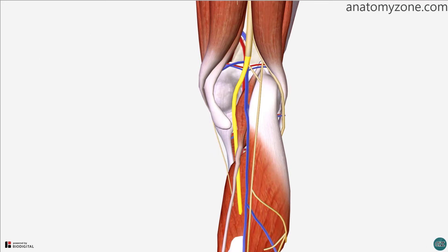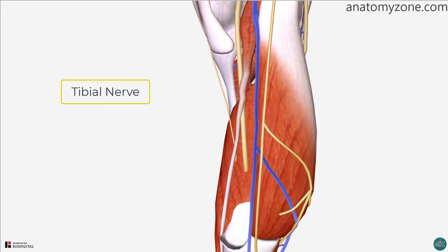I've just removed the medial head of the gastrocnemius here and you can see how the tibial nerve leaves the popliteal fossa and passes underneath the plantaris muscle to enter the posterior compartment of the leg.